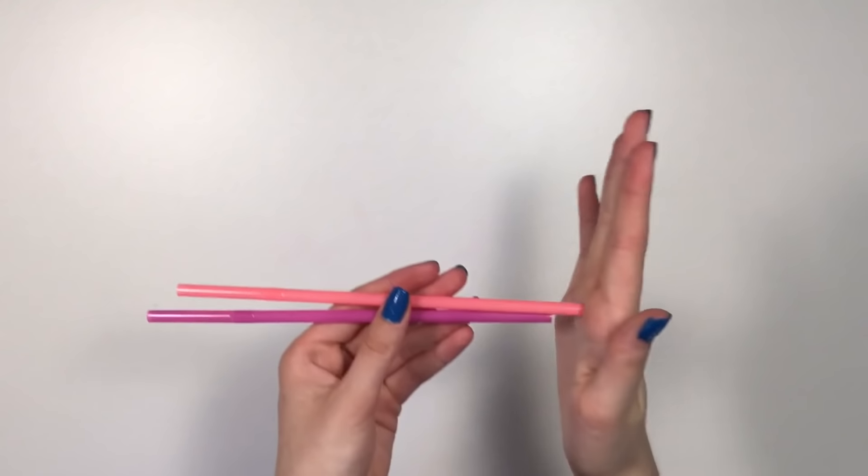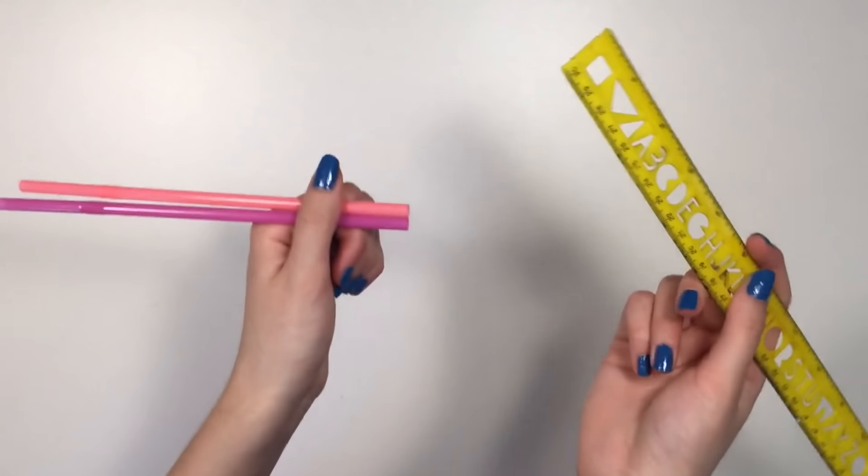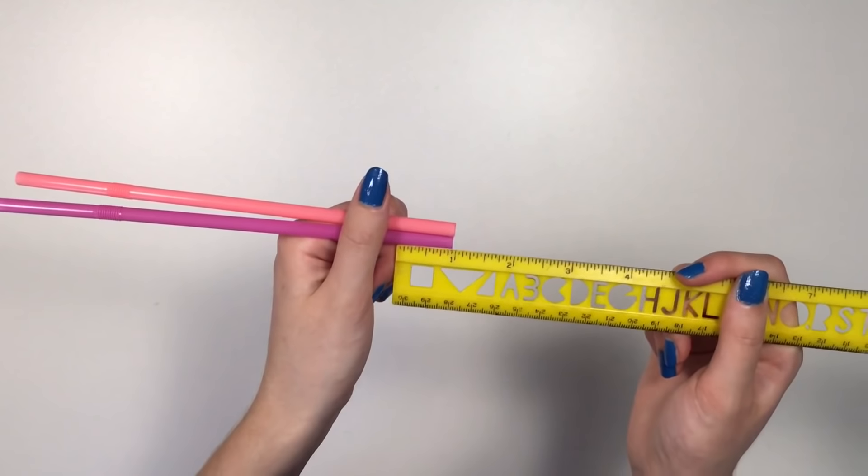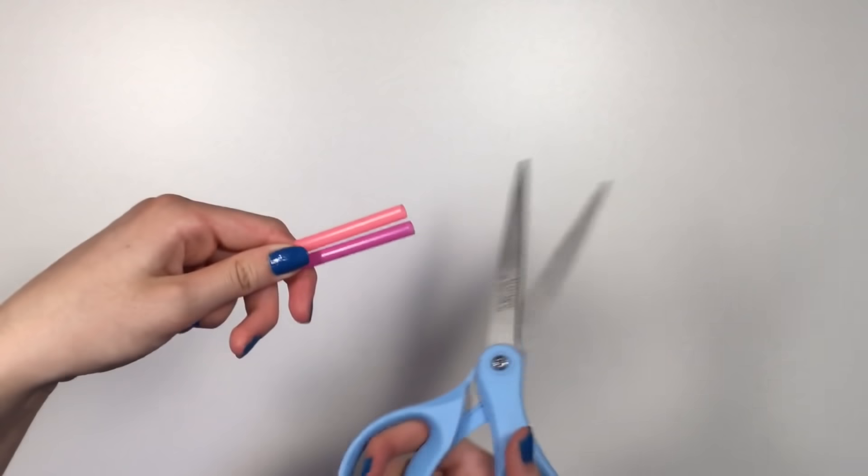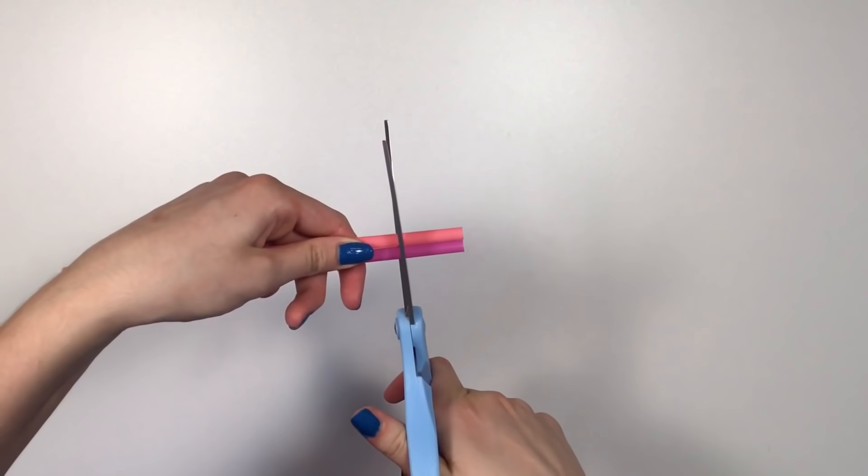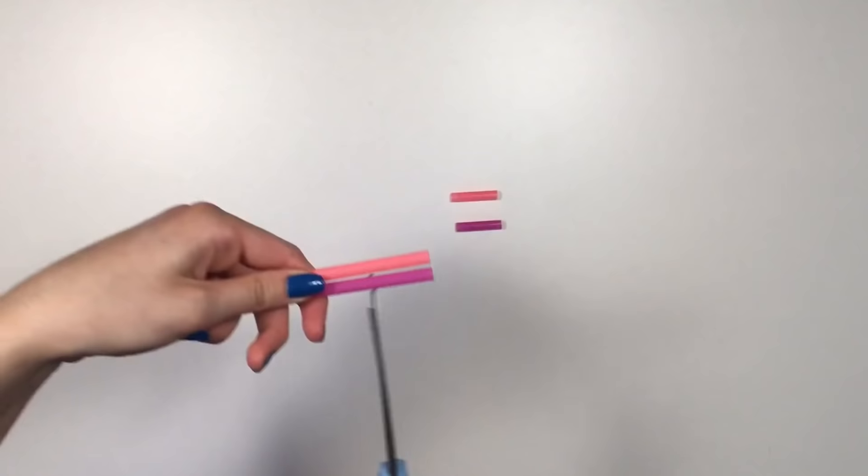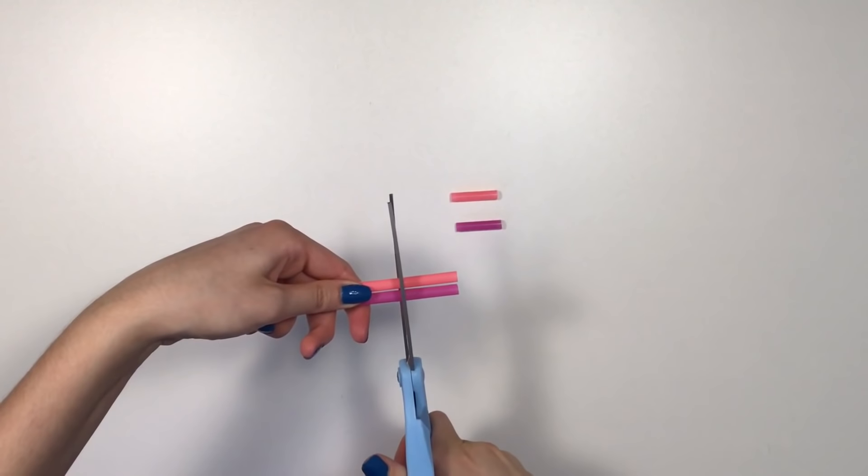Next up, I'll be showing you guys how to make a tangle fidget. Right here I have two plastic straws. Now I'm just gonna place them evenly. Now grab a ruler and measure out about one inch.